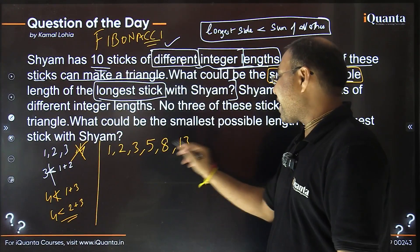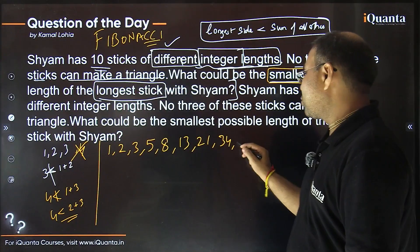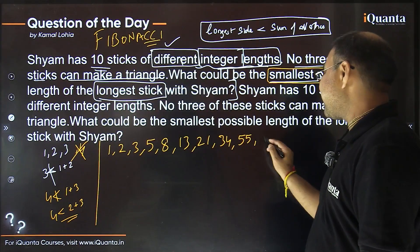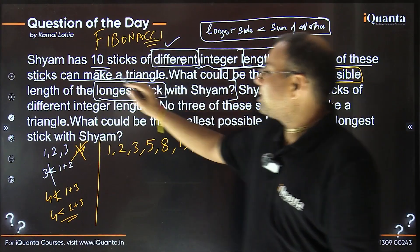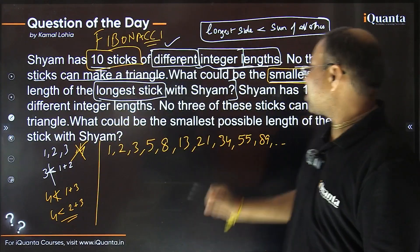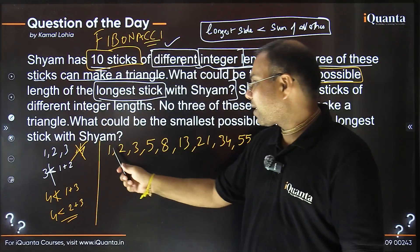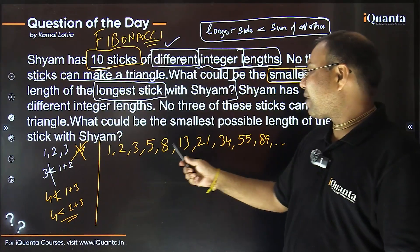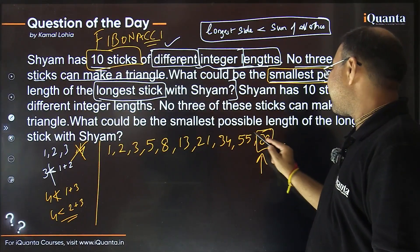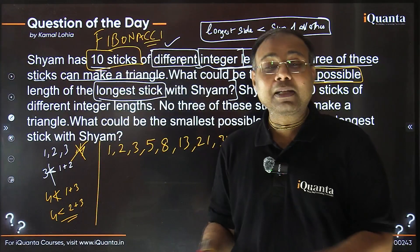Continuing the Fibonacci sequence: 8 + 13 = 21, then 13 + 21 = 34, then 21 + 34 = 55, then 34 + 55 = 89. Sham has only 10 sticks, so counting: 1, 2, 3, 5, 8, 13, 21, 34, 55, 89 — that is ten sticks. The 10th stick, the longest, has length 89. That is the required answer.